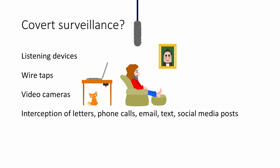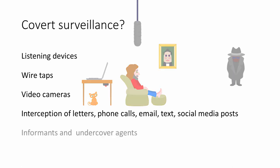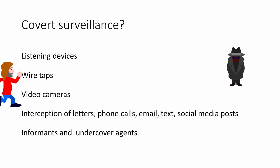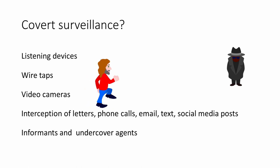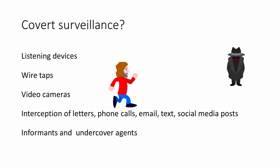Covert surveillance could also include the interception of any form of communication, including letters, parcels, phone calls, email, text, and even social media posts. Covert surveillance even includes the use of informants and undercover agents to follow people — so-called covert human intelligence sources.